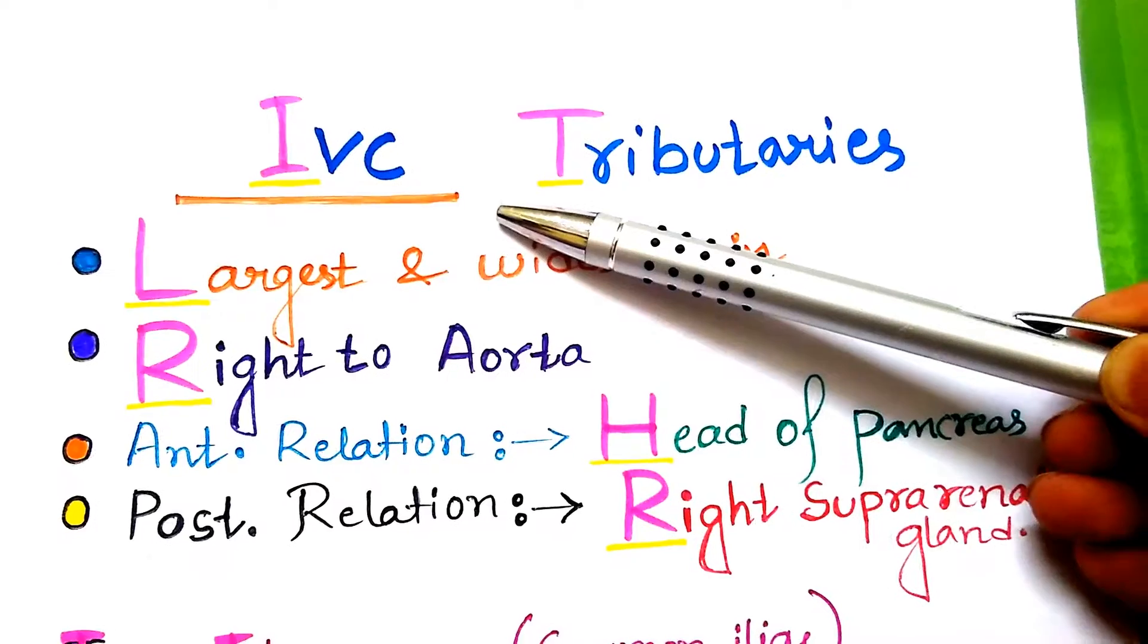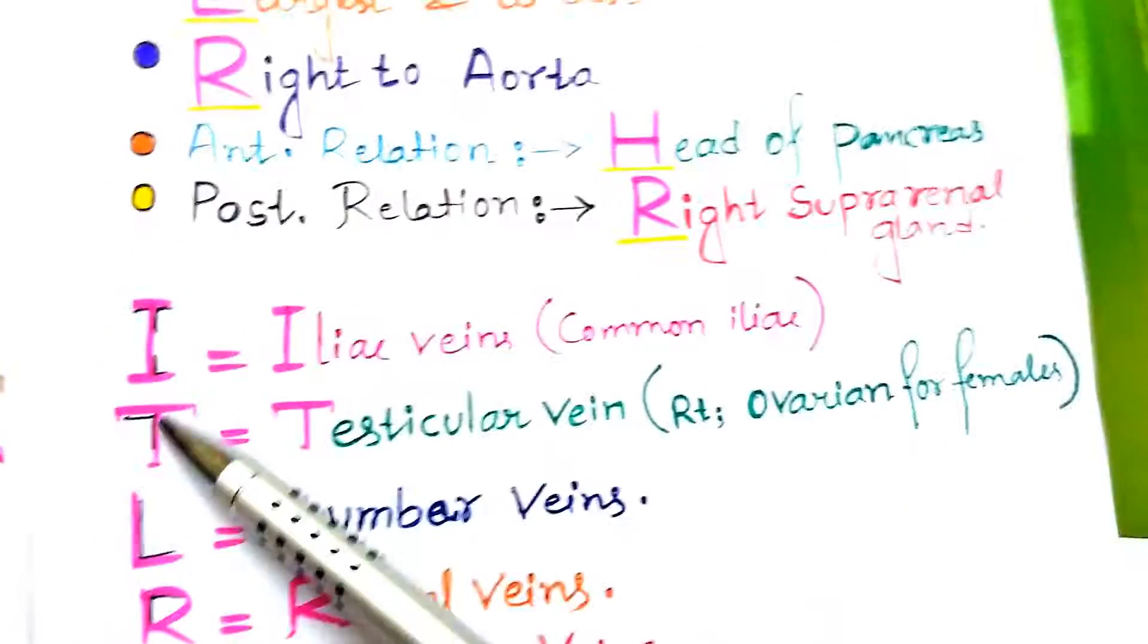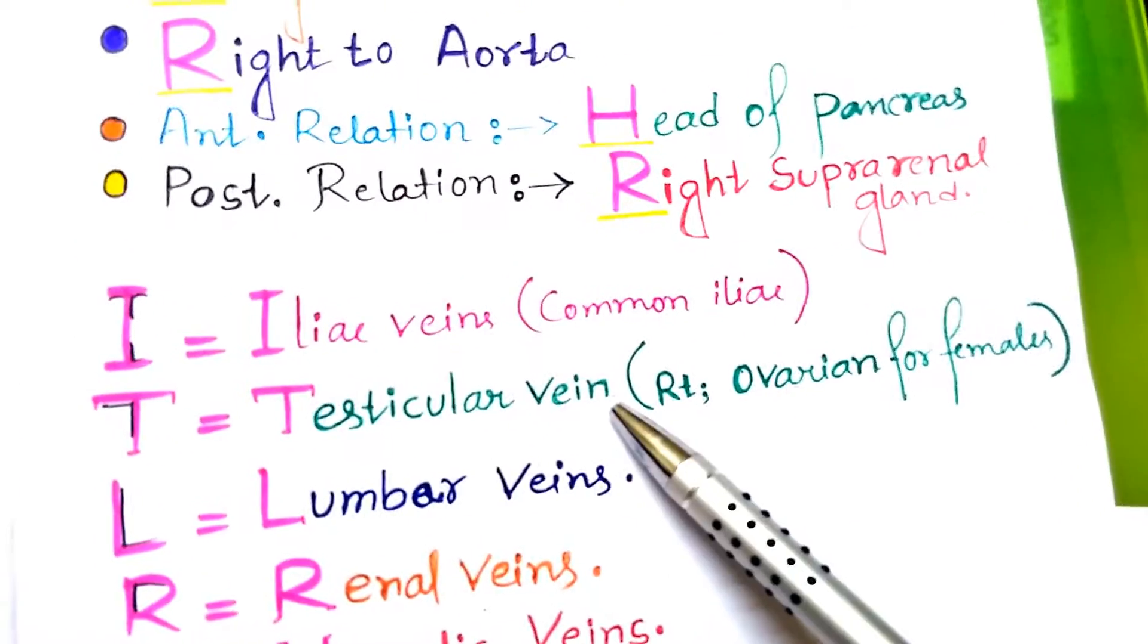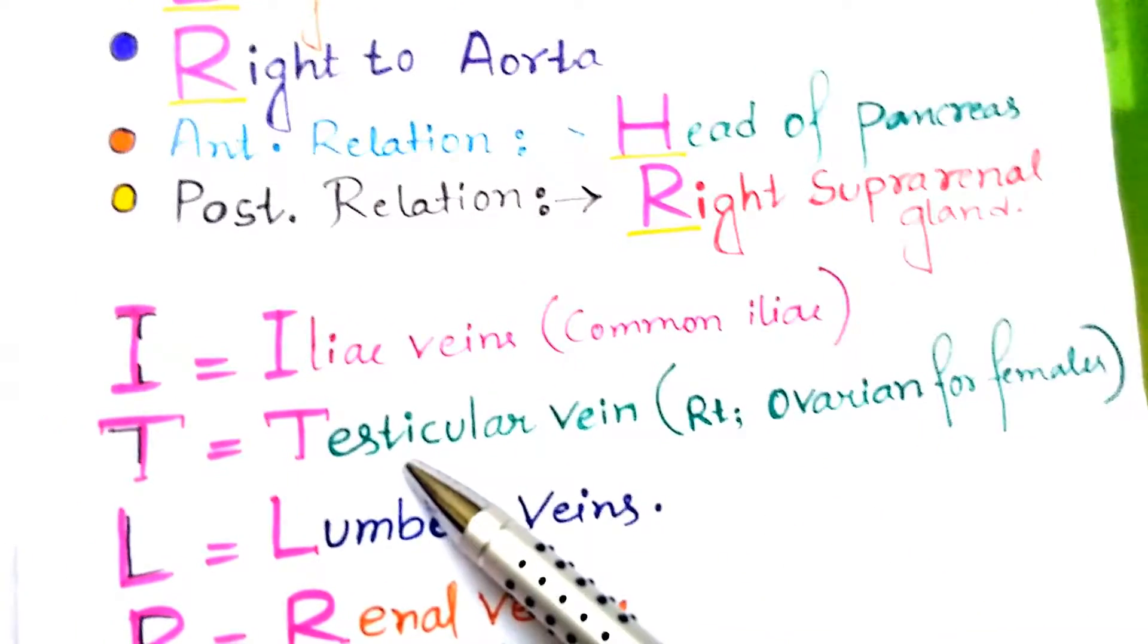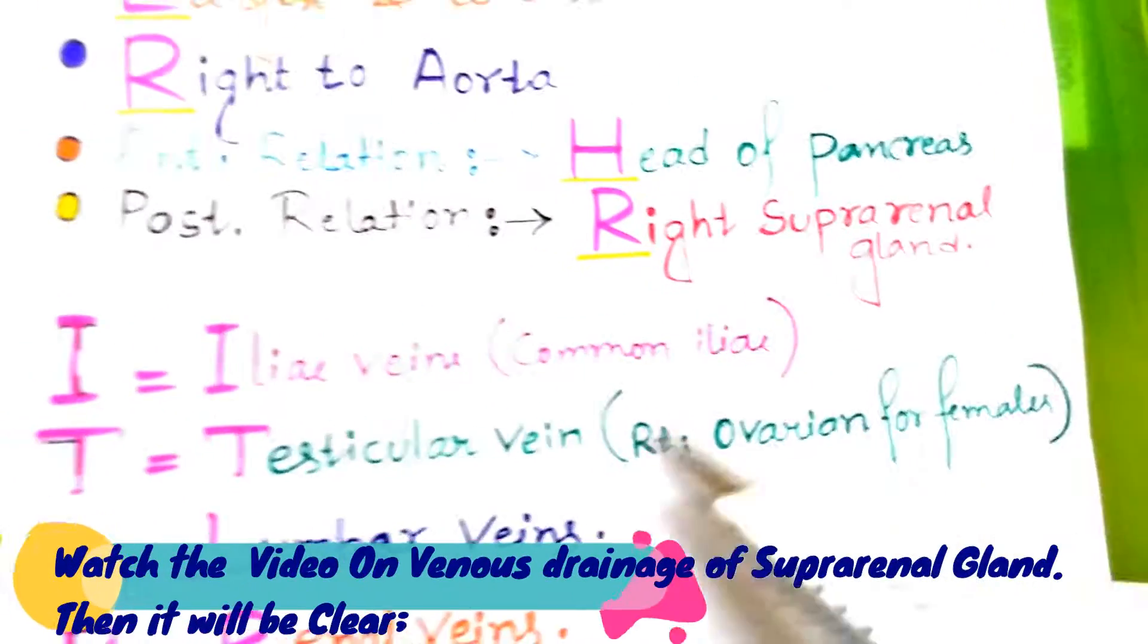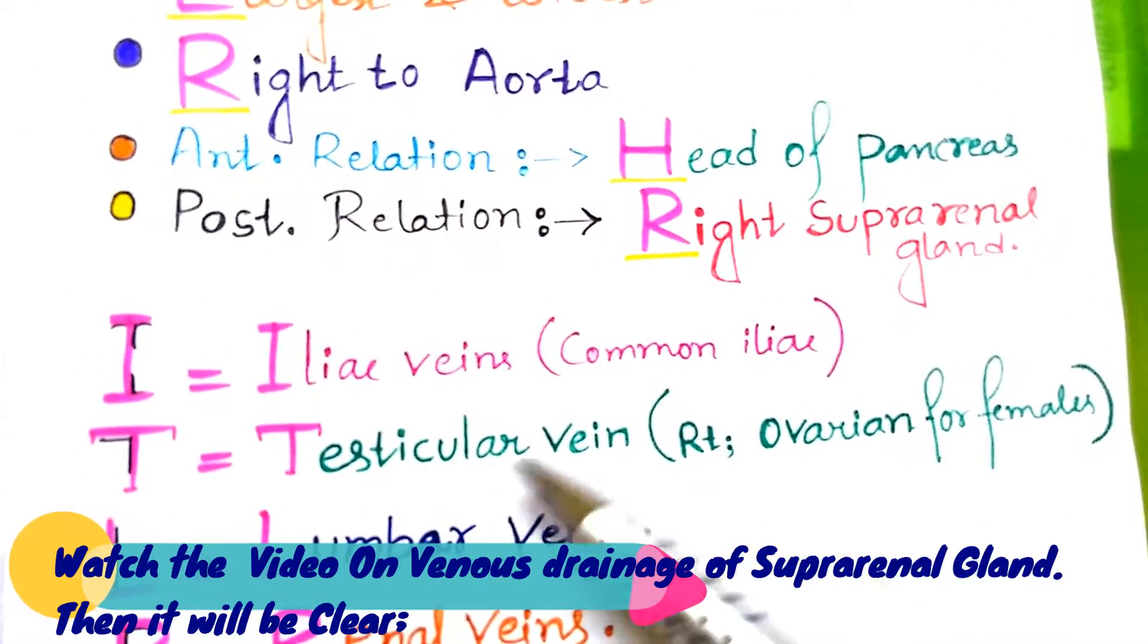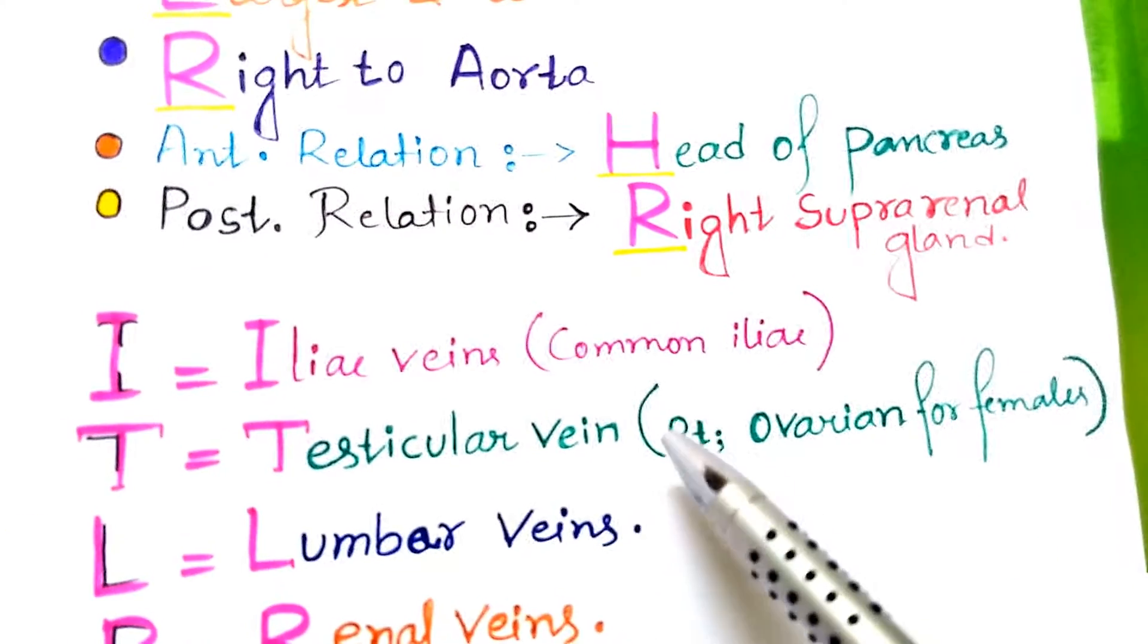From here we can find the tributaries of inferior vena cava. From IT we can find iliac veins and testicular vein. The iliac vein, that is common iliac veins, and testicular vein, that is right testicular vein and ovarian veins for females. Now how to remember the right and left thing, I made a separate video for that.